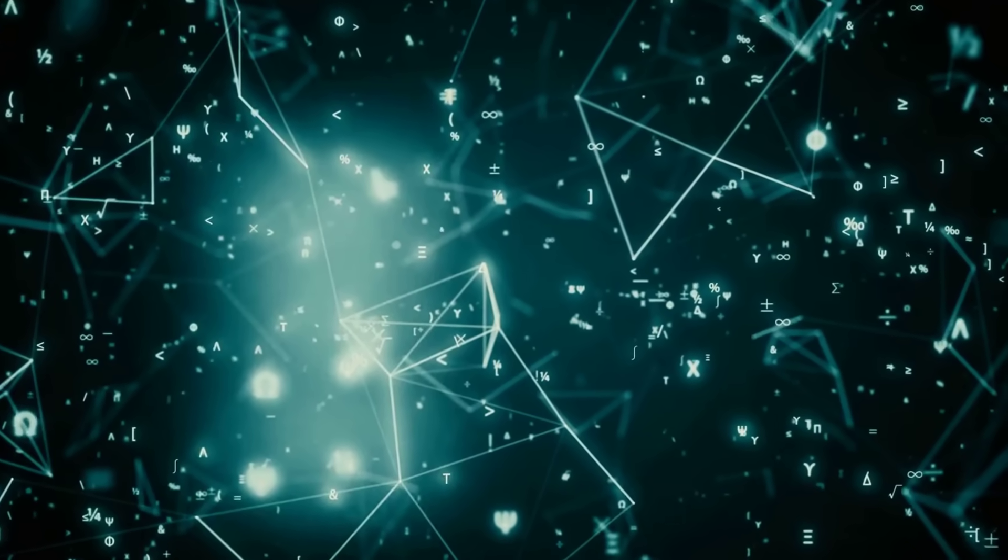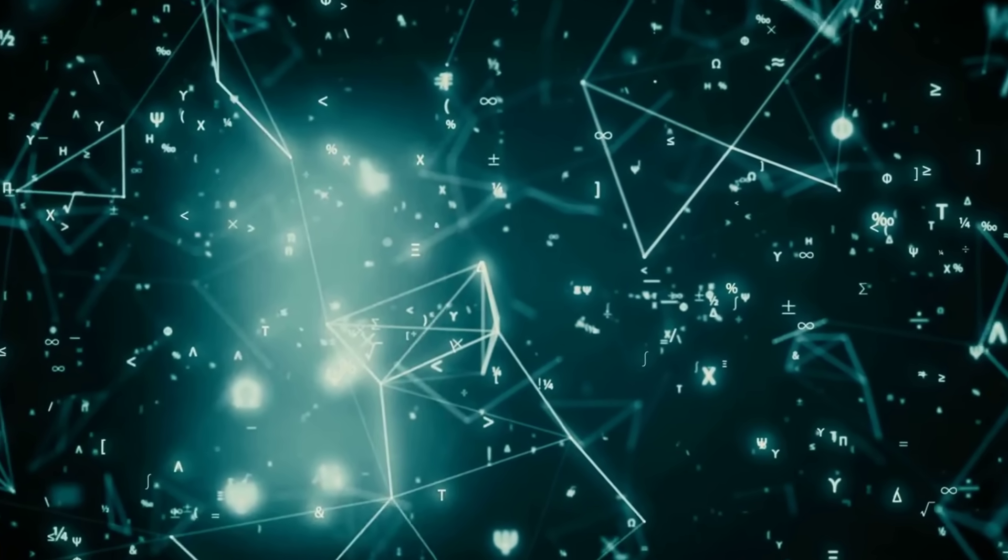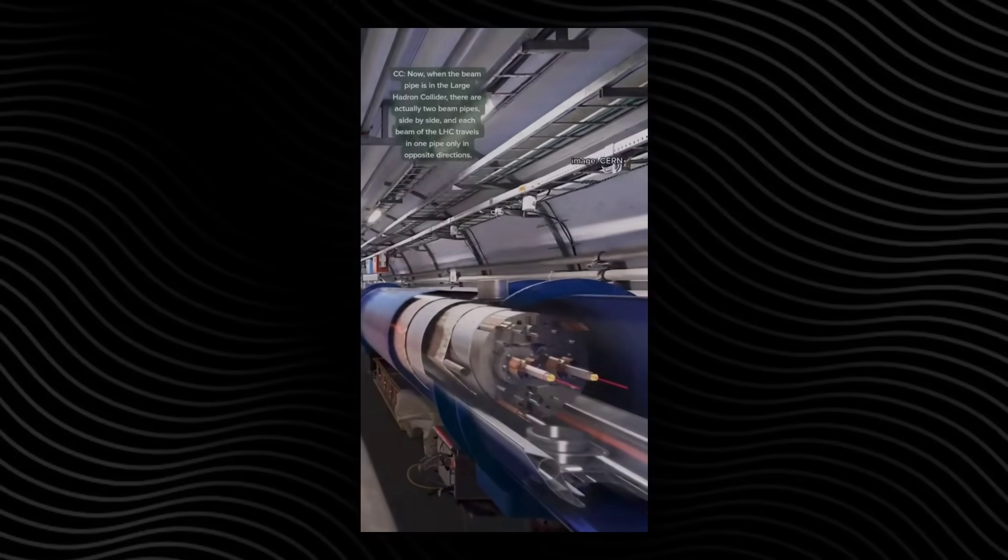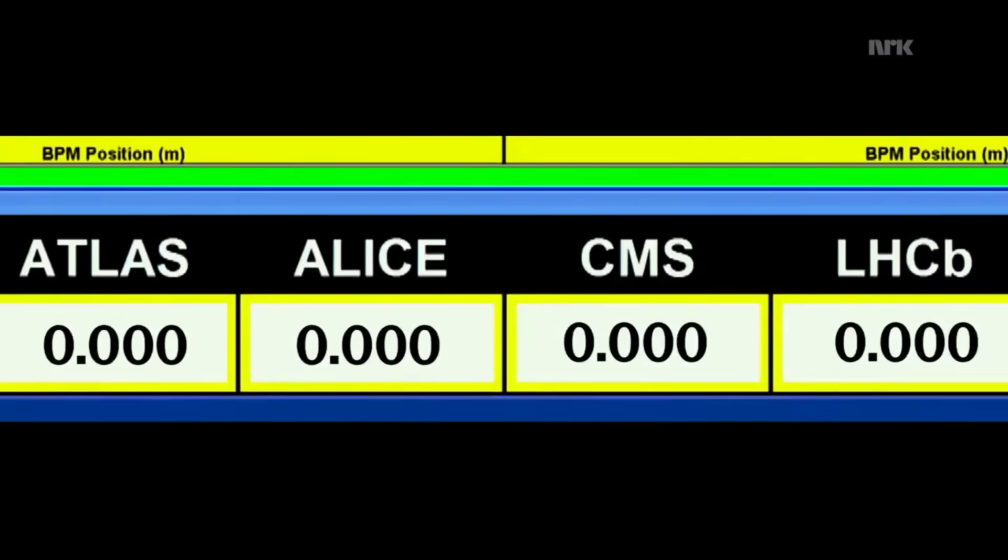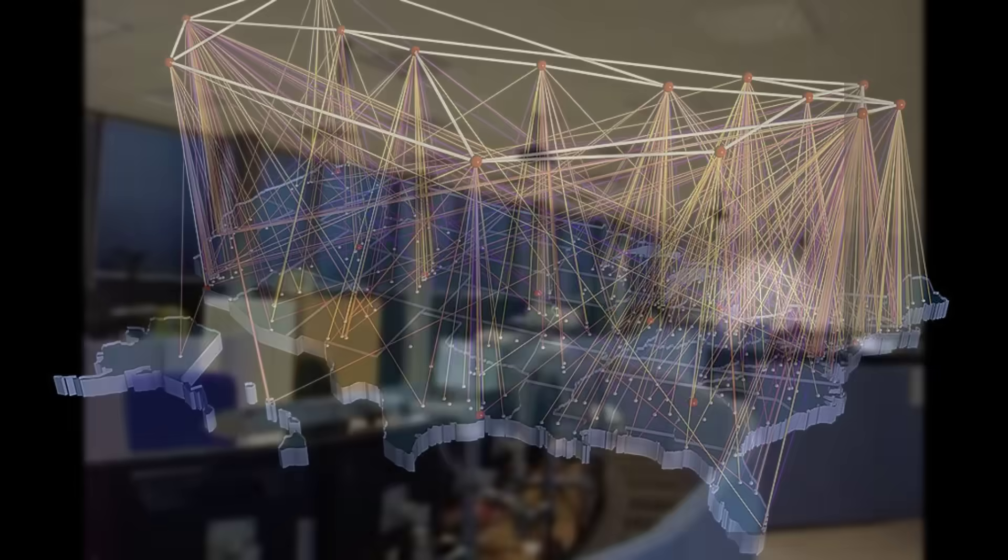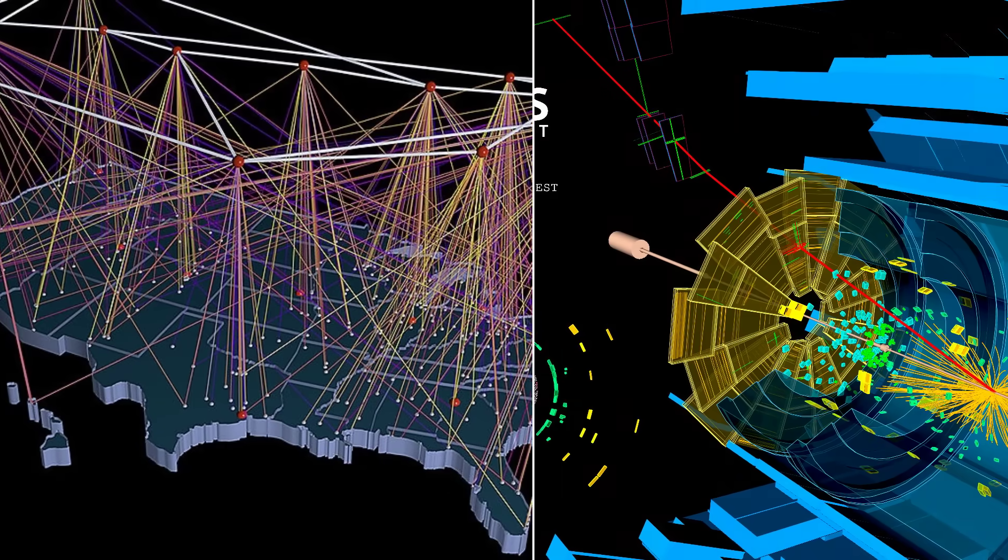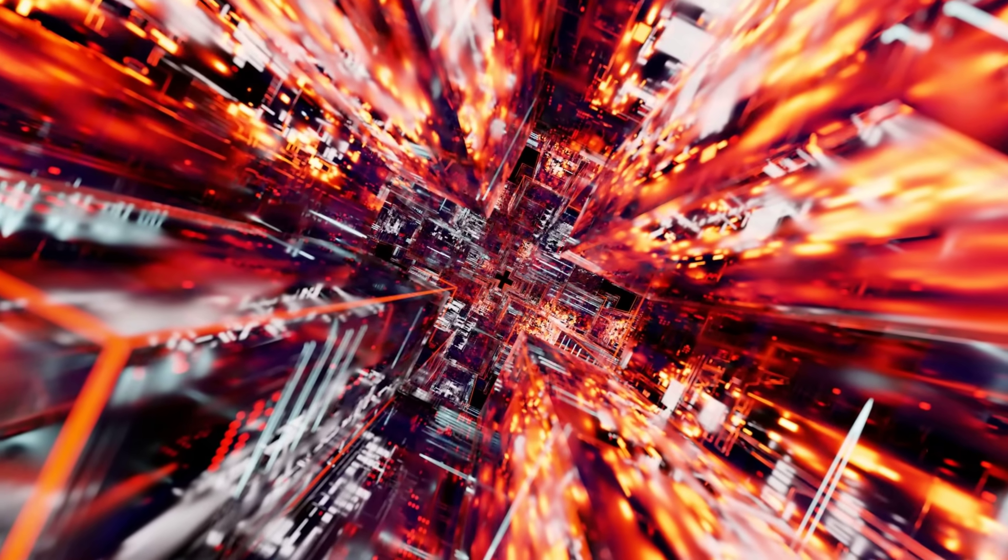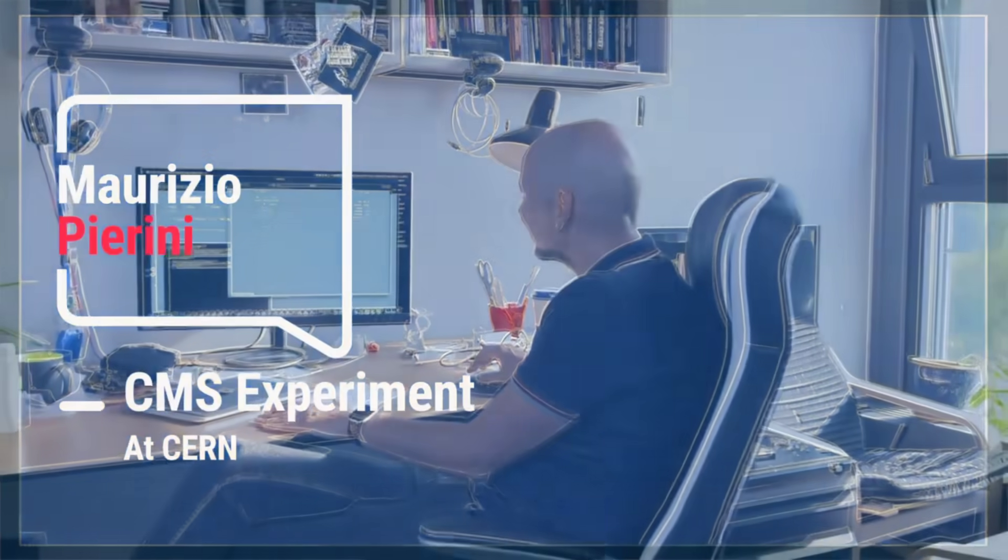Protons racing at nearly the speed of light smash together inside ATLAS, unleashing a storm of particles and energy. Each collision produces a digital avalanche: millions of data points, most of it routine, some of it never seen before. Sifting through this chaos by hand is impossible. Instead, physicists turn to artificial intelligence, building algorithms that learn to spot the rarest signals buried in the noise.